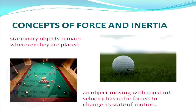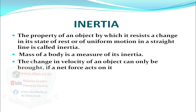We all know that stationary objects remain wherever they are placed. These objects cannot move on their own from one place to another unless forced to change their state of rest. Similarly, an object moving with constant velocity has to be forced to change its state of motion. From these examples we can define inertia: the property of an object by which it resists a change in its state of rest or of uniform motion in a straight line is called inertia. The mass of a body is a measure of its inertia — more the mass, more will be the inertia.